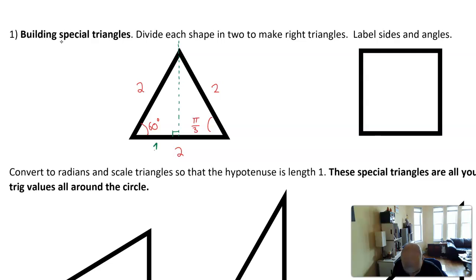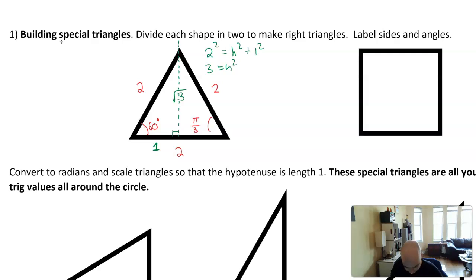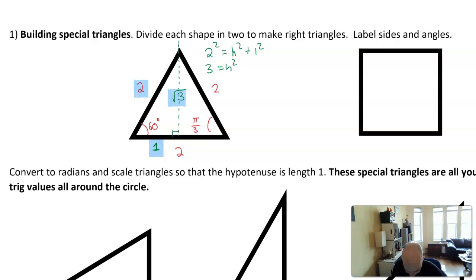The base here is 1 and the length of the altitude is going to be root 3. Why? Because you can do the Pythagorean theorem: 2 squared equals h squared plus 1 squared. Solving, you get 3 equals h squared, so the height must be root 3. That gives us what we call a special right triangle — a 30-60-90 triangle — where all the sides have ratios 1, root 3, and 2, with the two short legs and then the hypotenuse.